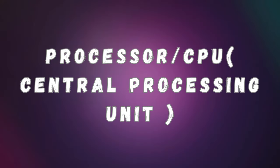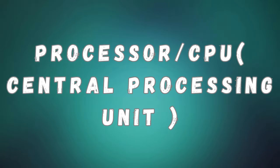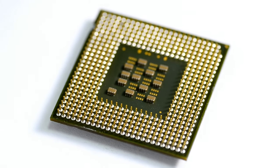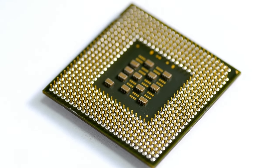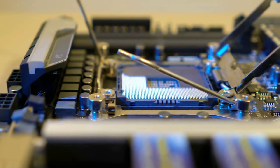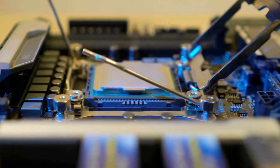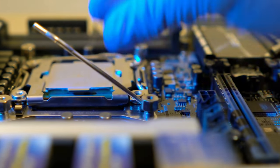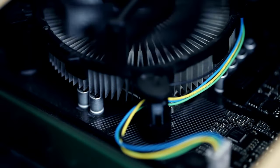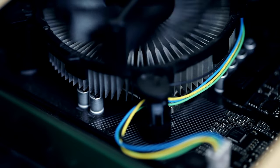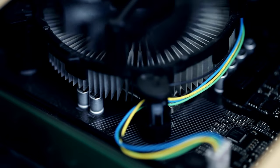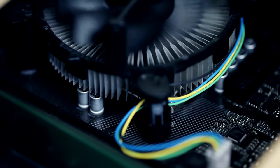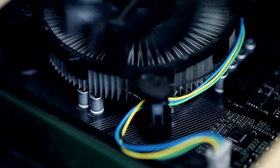Now on third number, we have the processor, also known as the CPU — central processing unit. It is the brain of the computer system, responsible for performing calculations and executing instructions that enable the computer to perform various tasks and run software applications. The processor is a small chip located on the motherboard, typically covered by a heat sink and fan to dissipate heat. It consists of millions of transistors organized into circuits that perform functions such as fetching instructions, decoding them, executing them, and storing data. The performance of a processor is measured by its clock speed — the number of cycles it can perform per second — measured in gigahertz.